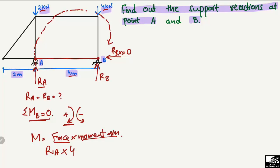The next load creating a moment about point B is 2 kN, acting downward. This creates an anticlockwise moment about point B, so it is taken as negative: minus 2 kN multiplied by its moment arm — the perpendicular distance from that load to point B — which is again 4 meters.